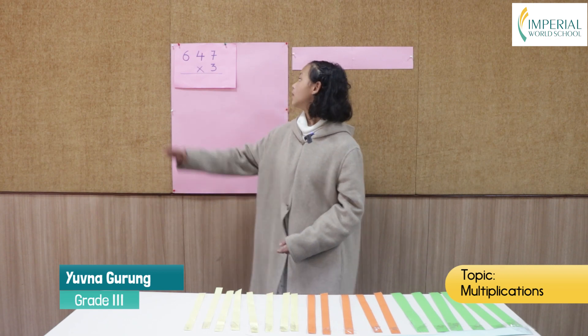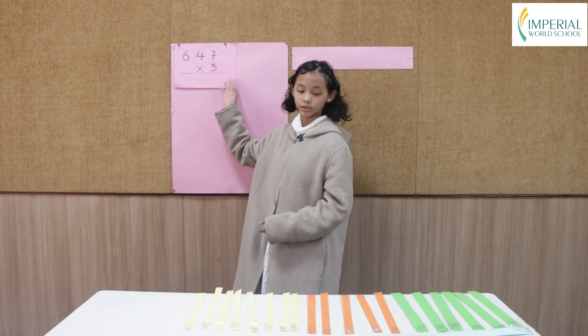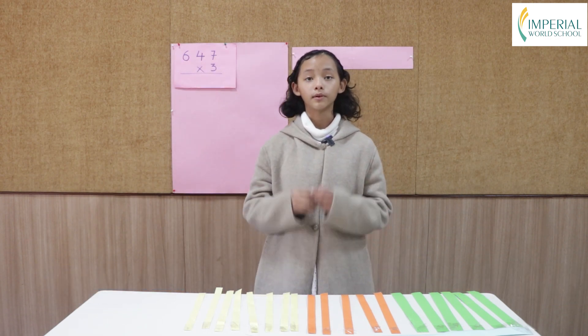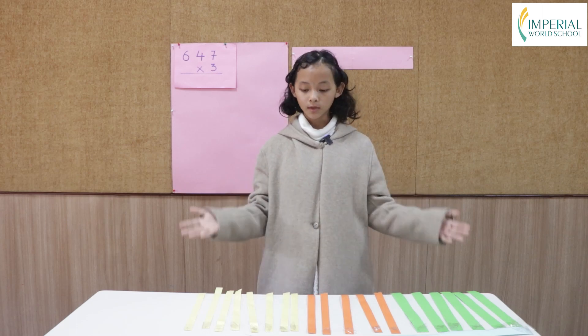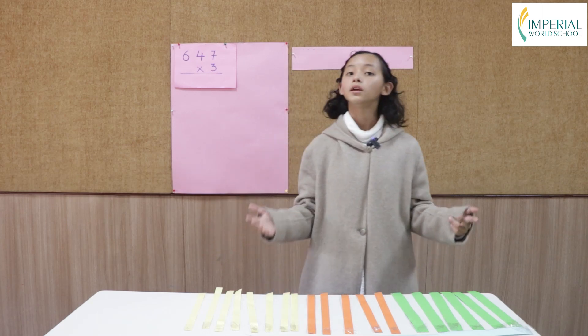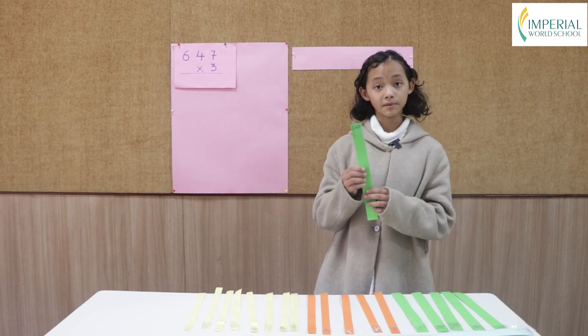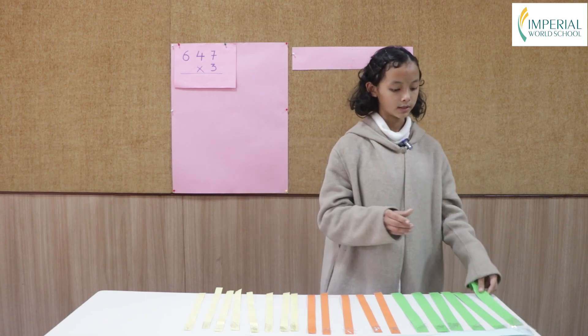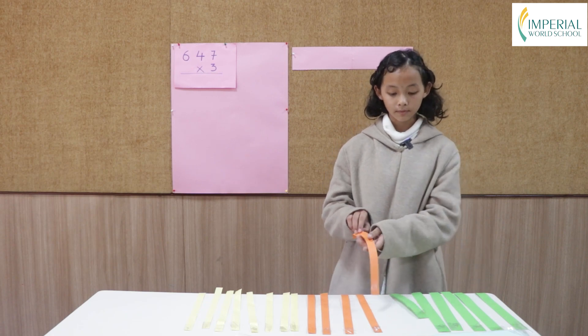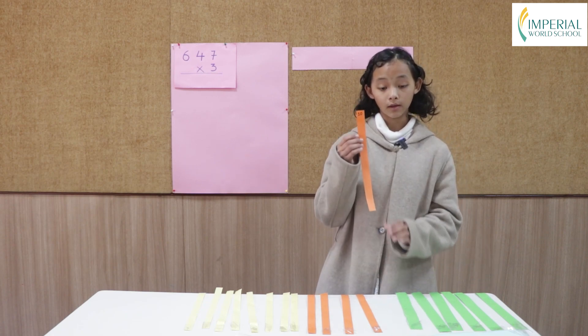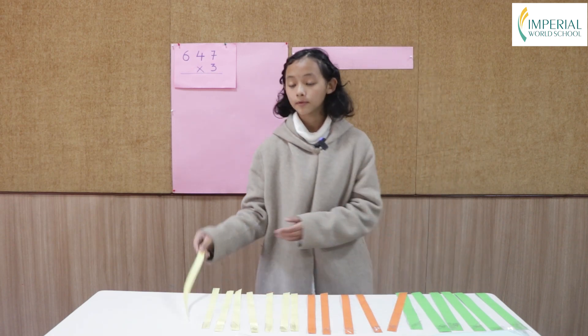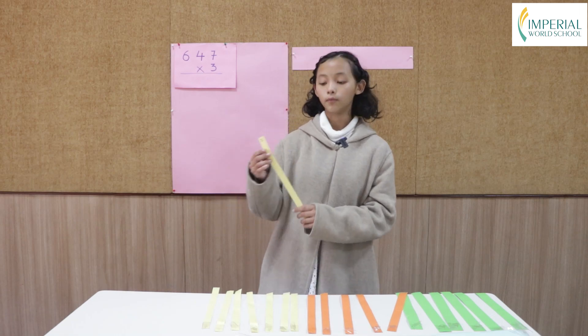Today I'm going to show multiplication of a single digit by showing you with an activity. Here are some colorful papers. They represent the place values. The green paper represents the place value of 100, the orange paper represents the place value of 10, and the yellow paper represents the place value of 1.